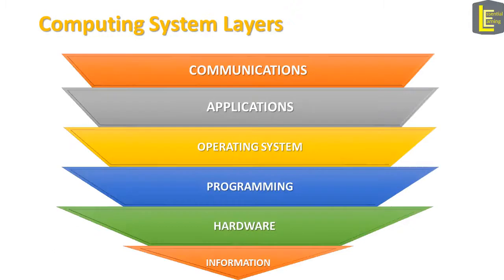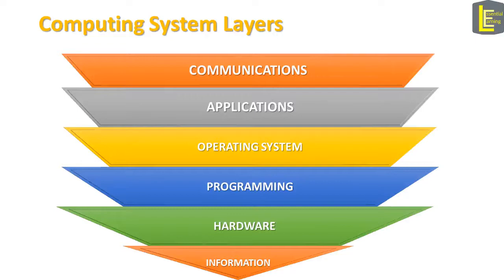A computing system consists of the following layers. We will learn these layers one by one from bottom to top in this course. From the bottom, the first layer is information, then we have hardware, programming, operating system, applications, and communications.